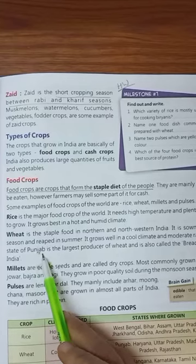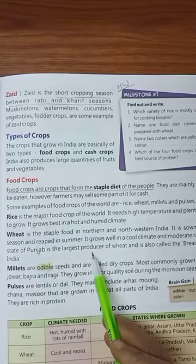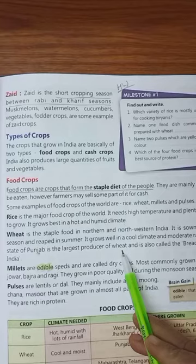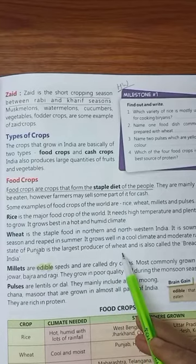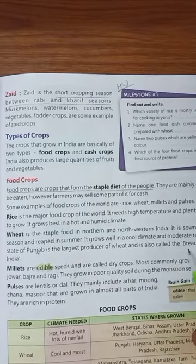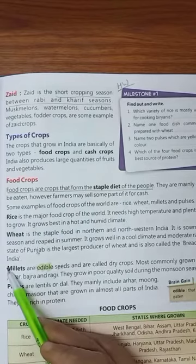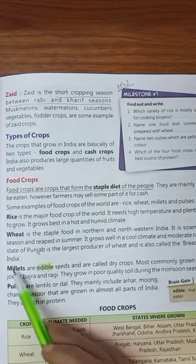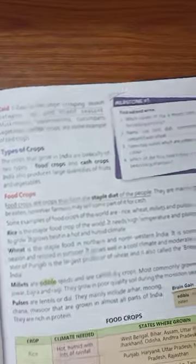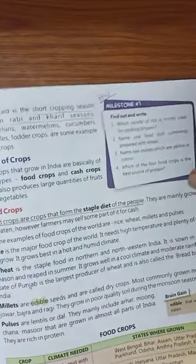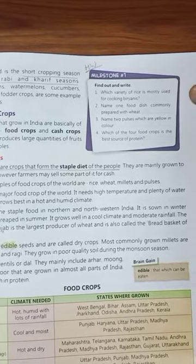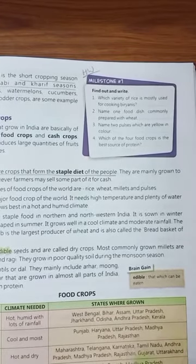The state of Punjab is the largest producer of wheat and is also called the bread basket of India. Which state is known as the bread basket of India? Punjab is known as the bread basket of India.